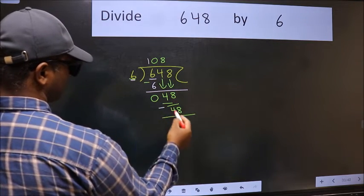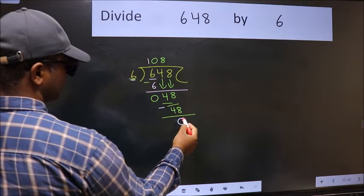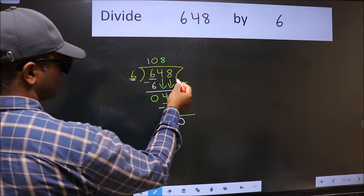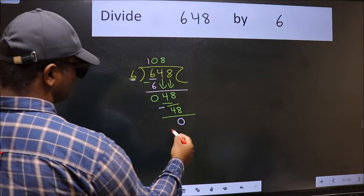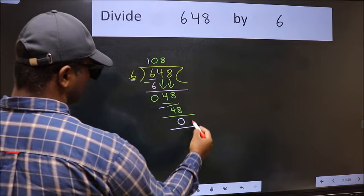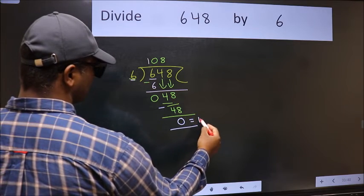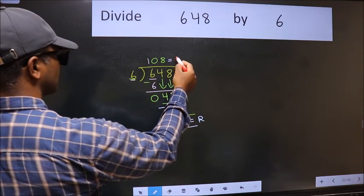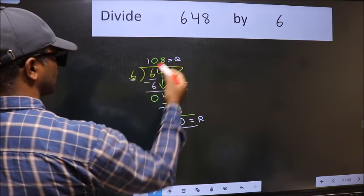Now we subtract and we get 0. There are no more numbers to bring down, so we stop here. This is our remainder, and this is our quotient.